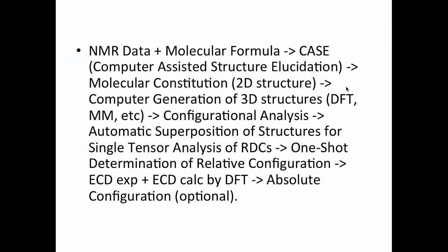The idea behind this paper is that you use NMR data, molecular formula, and then you combine this with a computer-assisted structure elucidation software case. Then you can get molecular constitution. Then with molecular constitution, you generate 3D structure by DFT, molecular mechanics. Then you do configurational analysis, automatic superposition of structure using the single tensor approximation. And in one shot, from here to here, you get the determination of the relative configuration just without human intervention.